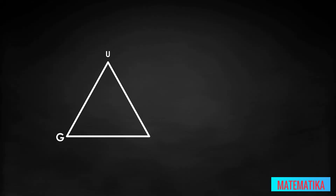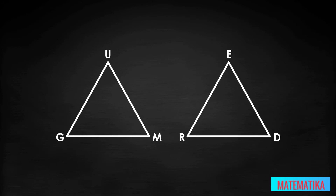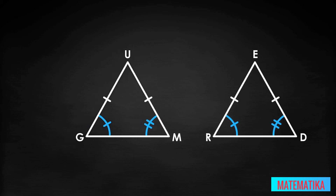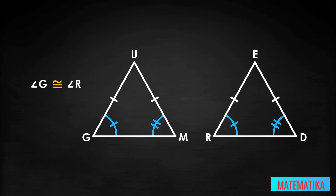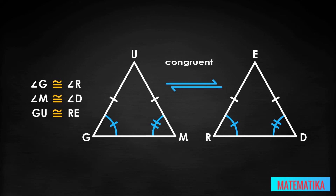To demonstrate with actual triangles, here we have triangle GUM and triangle RED. Are they congruent? Notice the little hatch marks that indicate all the congruencies, which in mathematical shorthand uses this symbol. As you can see, the congruent parts are: angle G is congruent to angle R, angle M is congruent to angle D, and side GU is congruent to side RE. We know two interior angles are congruent and consecutive — meaning they are next to each other — but we know nothing about the side between them. Instead, we know that another side is congruent.